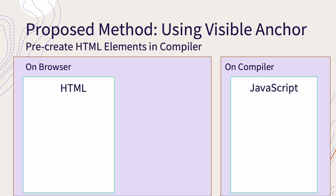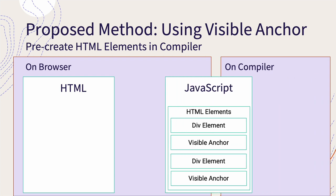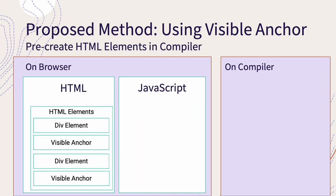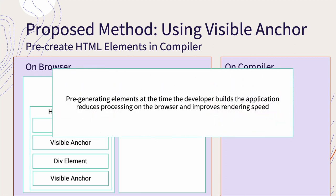To solve this problem, we propose a method of pre-generating HTML at compile time using a technique called visible anchor. Compilation is done only once by the developer before the application is distributed, so there is no need for the user to run it in the browser. Thus, the user only needs to insert a batch of pre-generated elements in JavaScript in the browser, which greatly improves rendering speed.